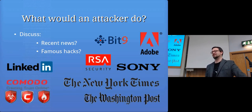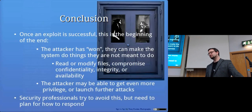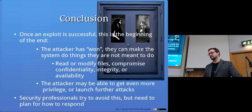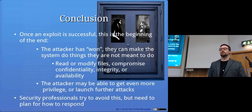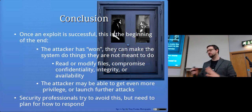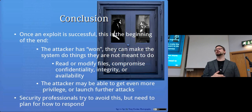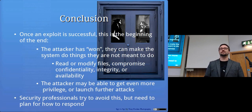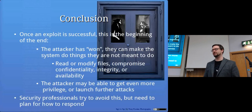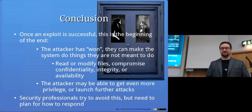In conclusion, once an exploit is successful it's just the beginning. Attackers can make the system do things it wasn't meant to do, read and modify files, compromise confidentiality, integrity, or availability. They may gain even more privilege or launch further attacks. Security professionals need to plan for this — not just try to prevent attacks in the first place, but also have a way of detecting that an attack has happened and responding to it. At some point you need to assume there's going to be a compromise, but you need to be ready to deal with it.